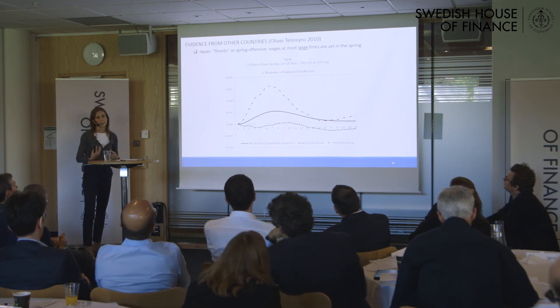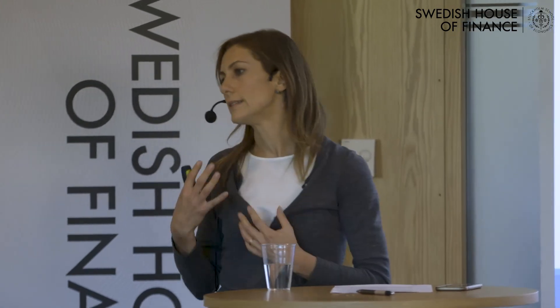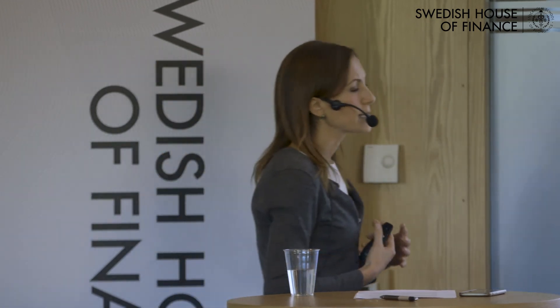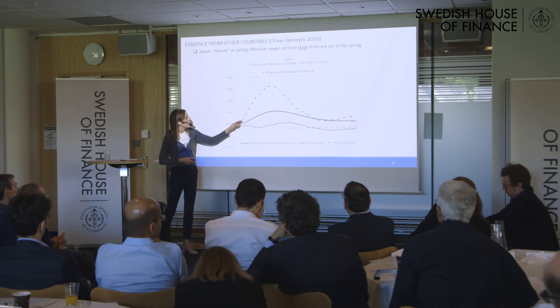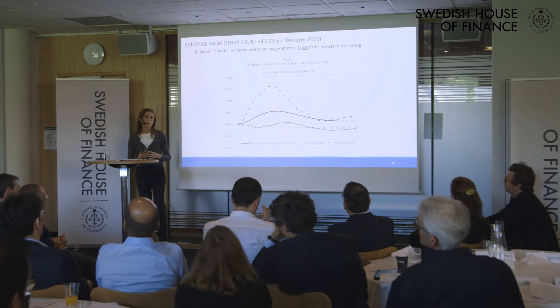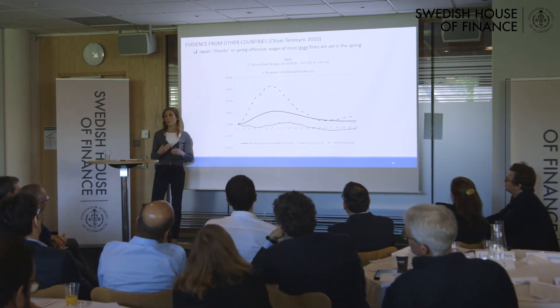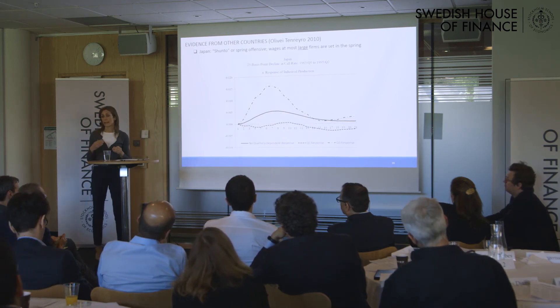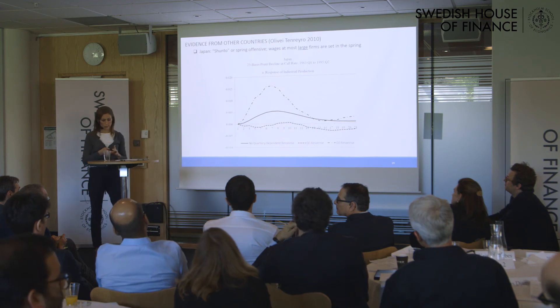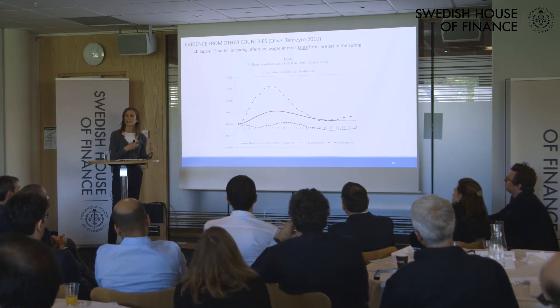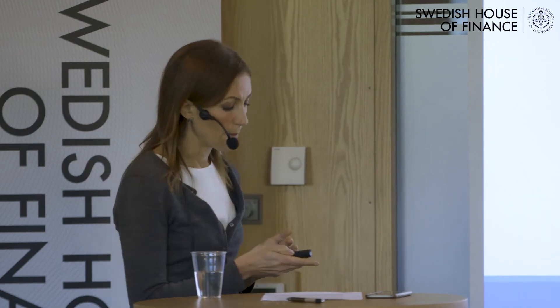We carried out this exercise in other countries. Japan was an interesting case because the seasonal cycle is very similar to the US, but the wage-setting process is very concentrated in the second quarter of the calendar year during the Shunto. The solid line shows the standard response of industrial production to a fall in the call rate without quarterly dependence. The dashed line shows the response when the shock takes place in the first quarter — when wages are flexible, just before the Shunto process — and the dot-dashed line shows the response after the Shunto in the third quarter. Again, we see differential effects depending on the effective degree of wage rigidity at the time of the shock.